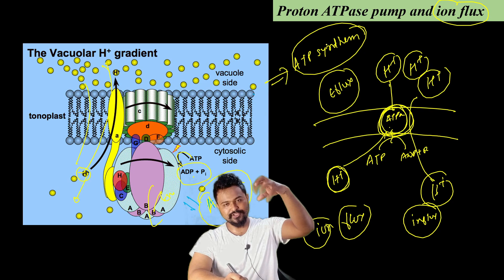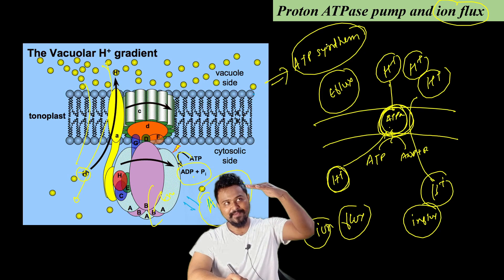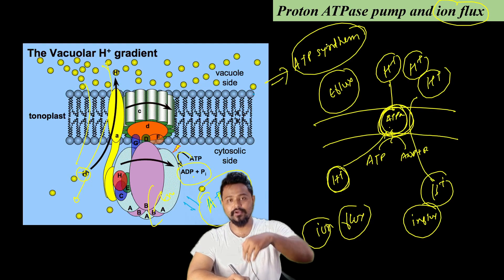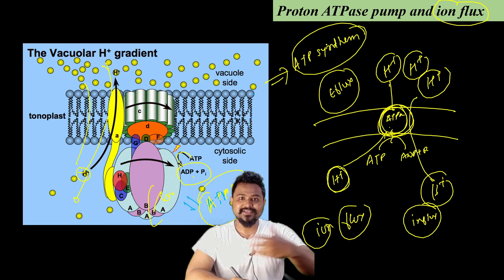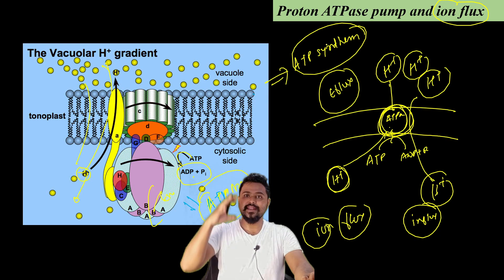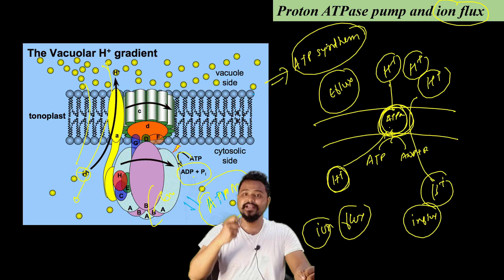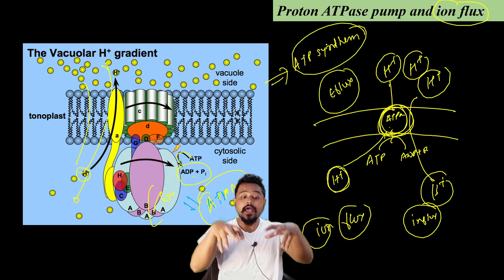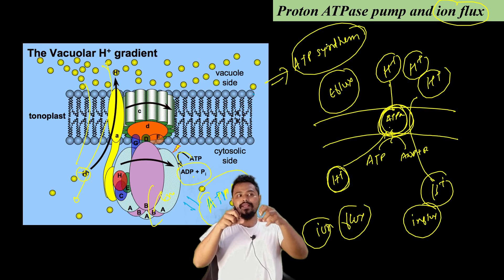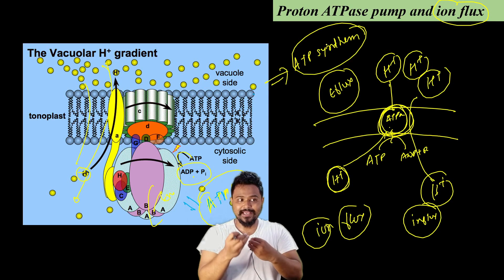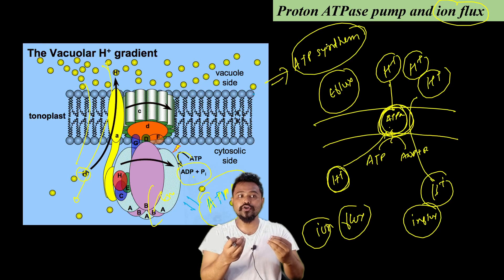The energy is used by this ATPase pump to transport nutrients from the soil into plant cells, helping plants obtain the nutrients they need.